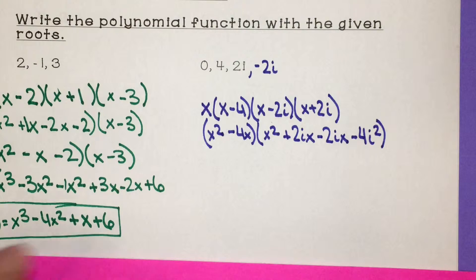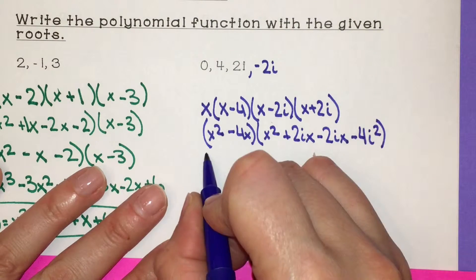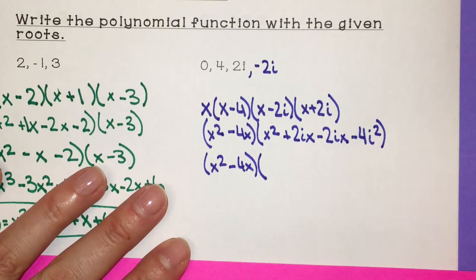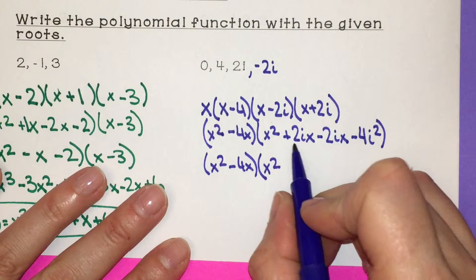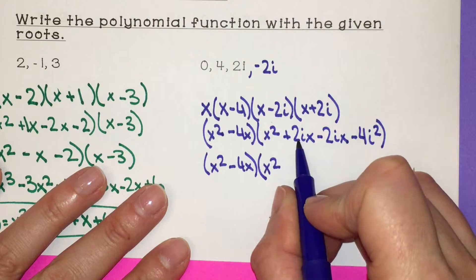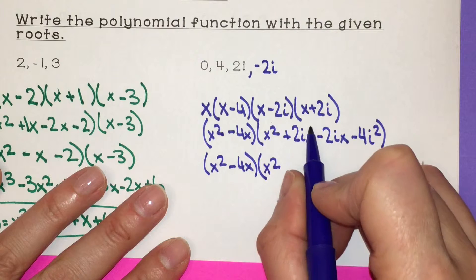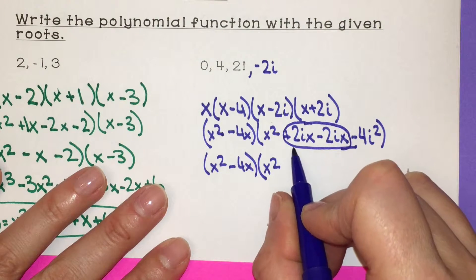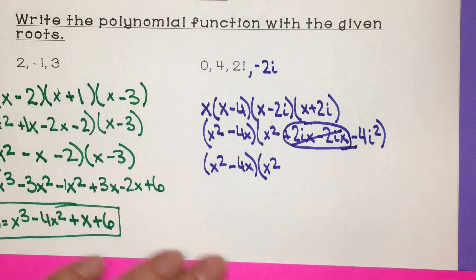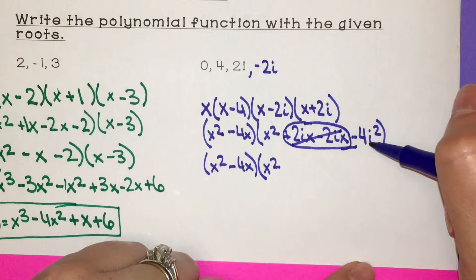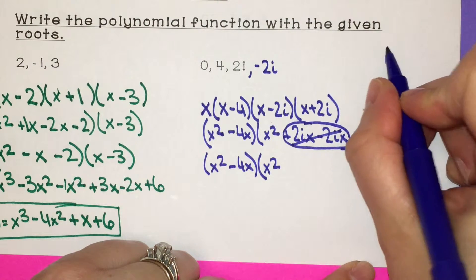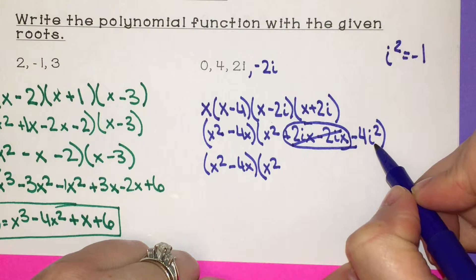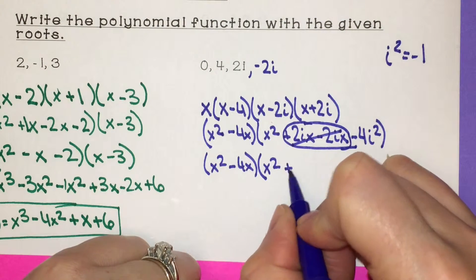Combining like terms: 2ix minus 2ix equals 0, they cancel each other out. We have negative 4 times i squared, but i squared equals negative 1, so negative 4 times negative 1 is positive 4. So the conjugate pair simplifies to x squared plus 4.